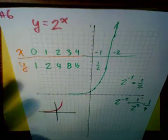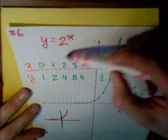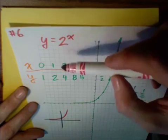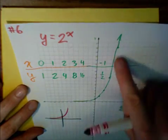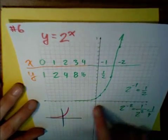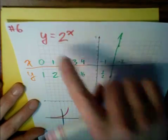And an interesting point about domain and range, the domain of this function is all real numbers. But the range, even though we're putting in negative values of x, we can only get a positive value out in return. So the range has to be greater than zero.